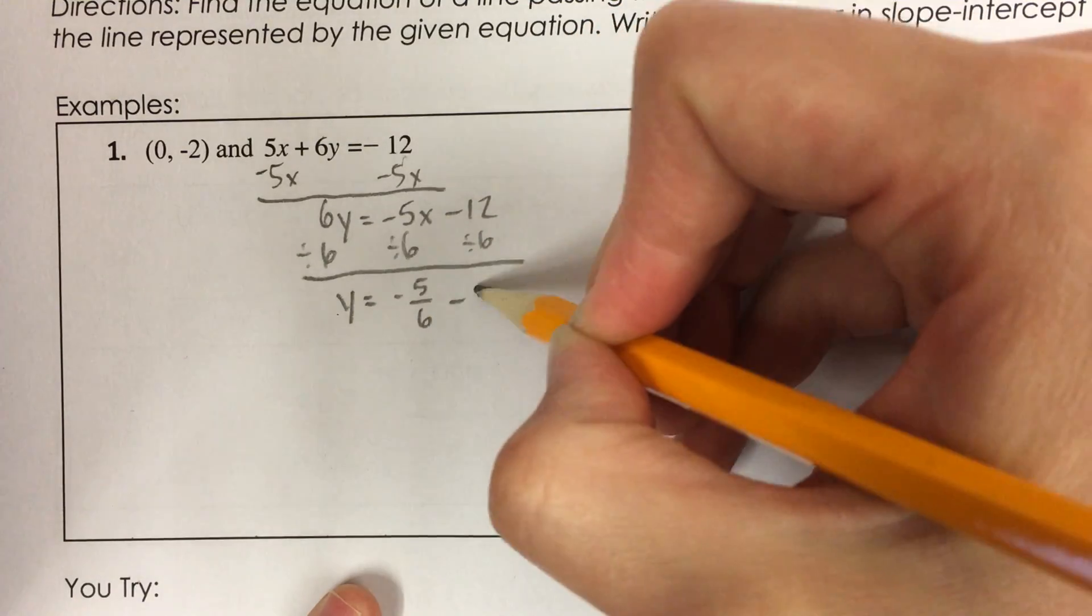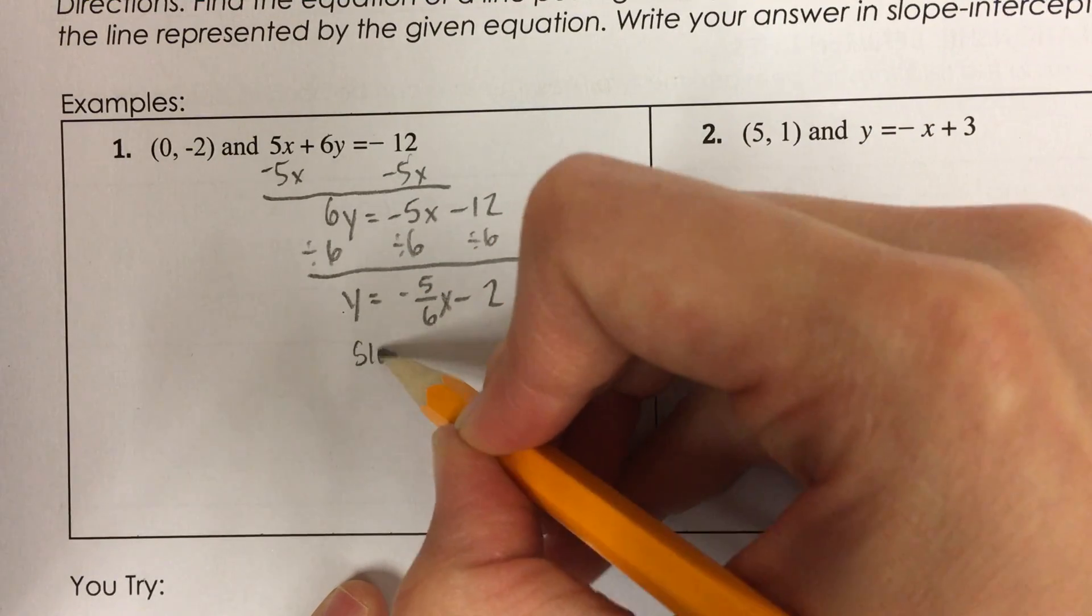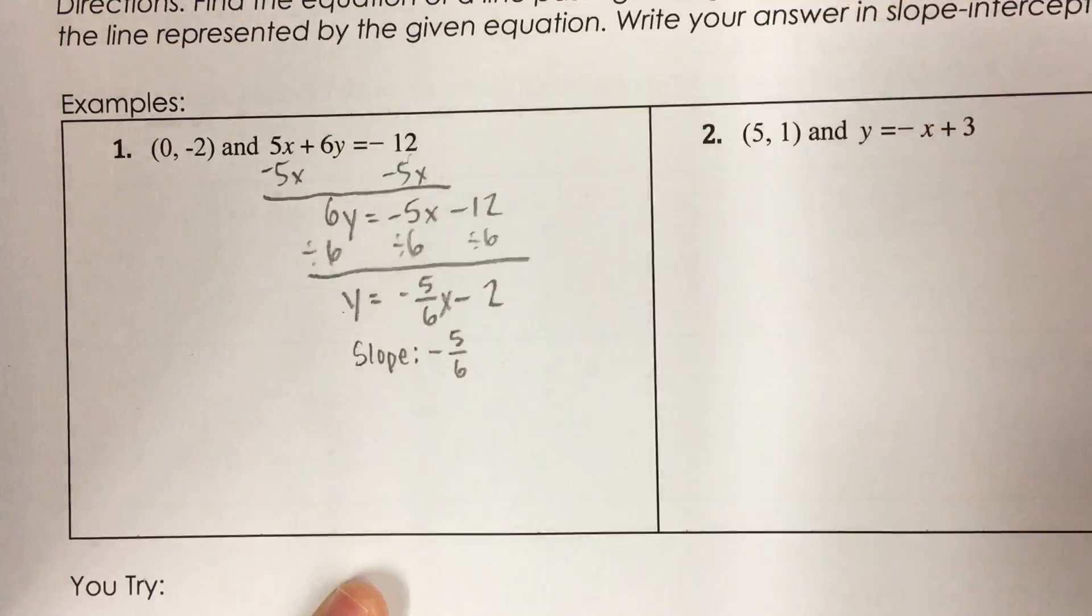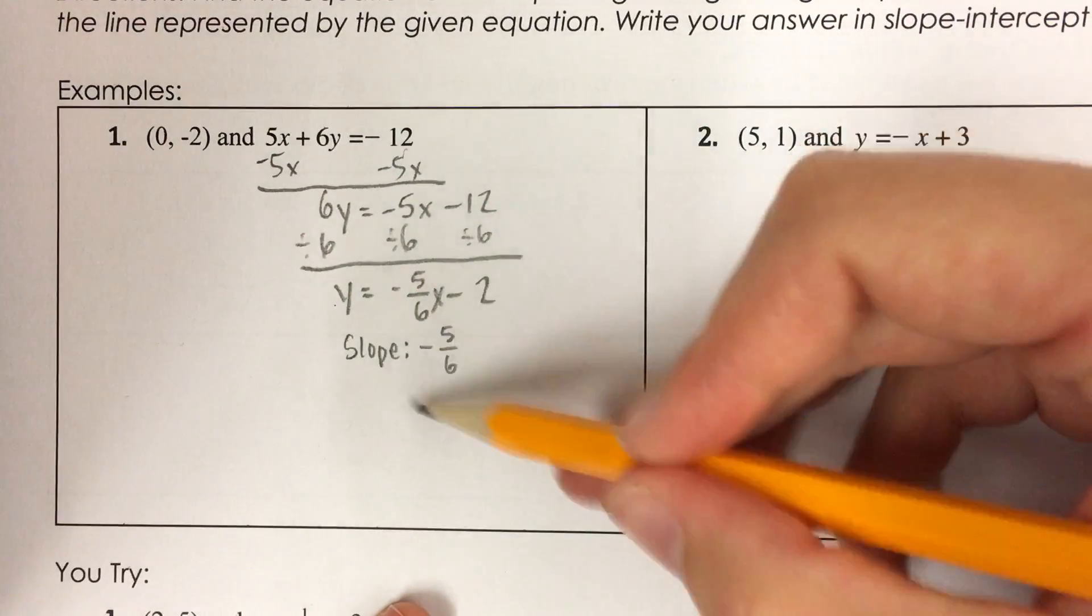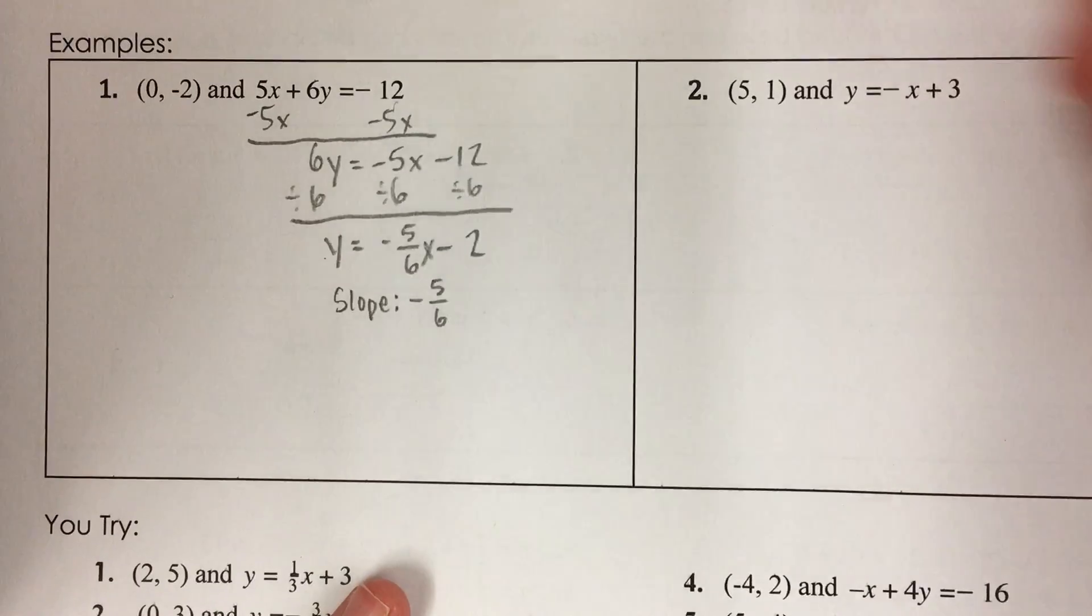Okay, now here's where the change comes in. The slope of this line is negative 5 sixths. Okay, but I'm not going to use that slope because I want the slope of the line that is perpendicular. So I need to take this slope and find the negative reciprocal.